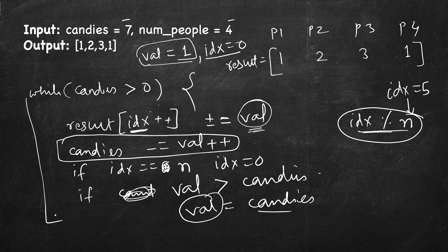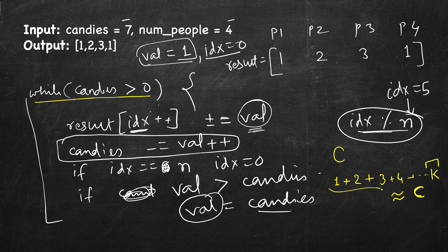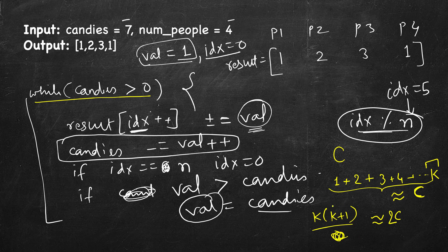Candies minus-equals val, and since val was set to candies for the last person, it becomes zero and the loop ends. Now let's analyze time complexity. We run the loop until candy count becomes zero. If we have c candies, we give 1 in the first iteration, 2 in the second, 3 in the third, and so on for k iterations. This sum is roughly equal to c, giving us k*(k+1)/2 ≈ c, so k² ≈ c.